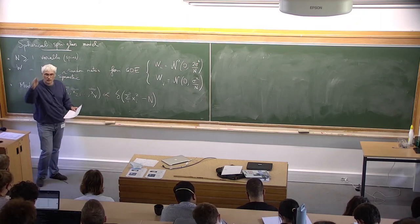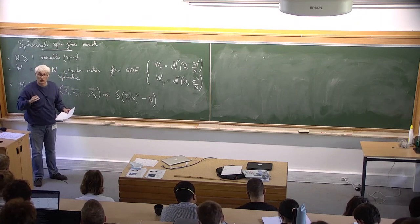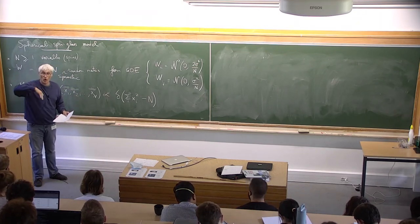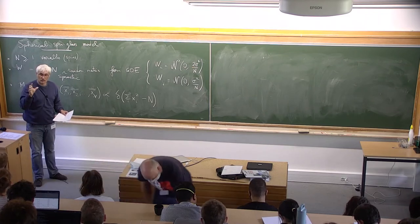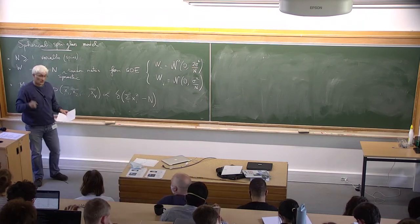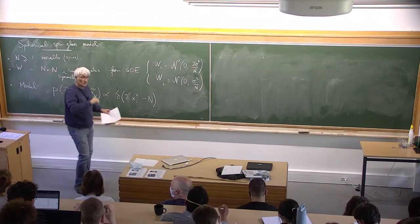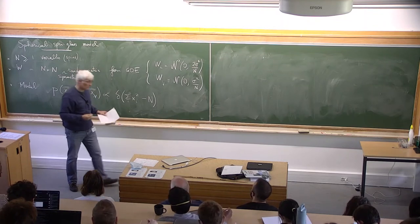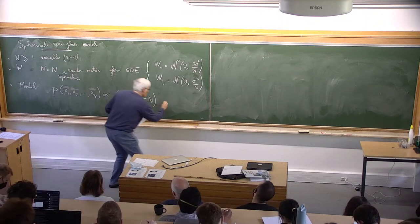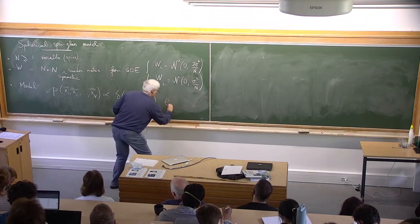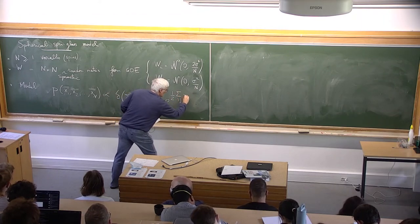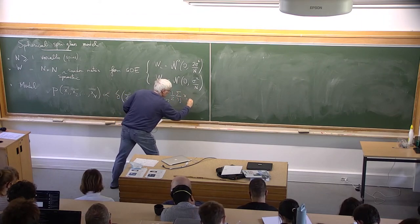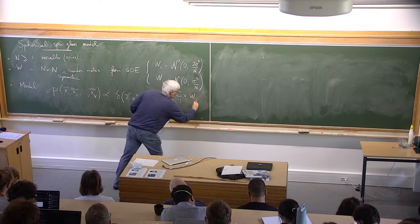My variables live on the n-dimensional hypersphere of radius square root of n. I will bias this uniform distribution on the hypersphere with what you would expect for a spin glass: a sum over i and j of x_i, w_ij, x_j.